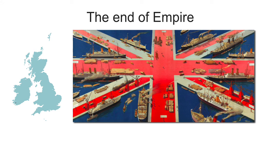Ghana became Britain's first African colony to reach independence in 1957. By 1967, more than 20 British territories were independent. In 1997, Hong Kong returned to Chinese administration. Though Britain still maintains overseas territories, the handover marked the final end of Britain's empire.